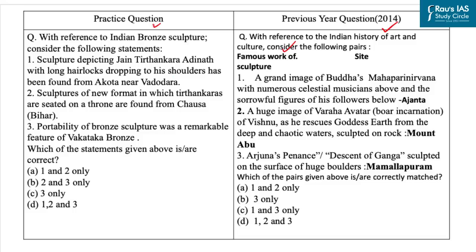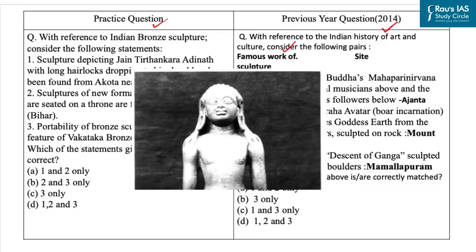Now let's come to the practice question. With reference to Indian bronze sculpture, the first statement is: a sculpture depicting Jain Tirthankara Adinath with long hair locks dropping to his shoulders has been found from Akota near Vadodara. This statement is incorrect, because interesting images of Jain Tirthankaras have been discovered from Chausa in Bihar, belonging to the Kushana period during the 2nd century CE. Remarkable is the depiction of Adinath or Vrishabhanath, identified with long hair locks dropping to his shoulders, while other Tirthankaras are noted for their short curly hair.